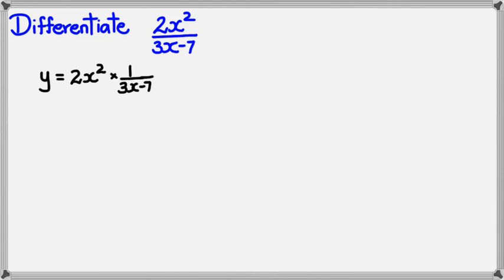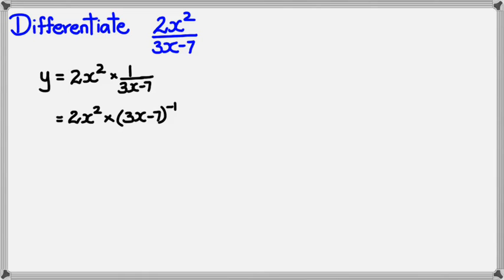First I'm going to separate this out. I can make this as 2x squared multiplied by 3x minus 7 to the power of negative 1.